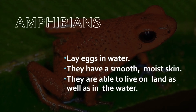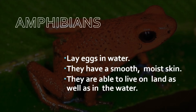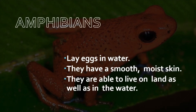Amphibians are able to live on land as well as in water. They lay eggs in water, and when they grow up into adults they move onto land. For example, the frog lays eggs in water and the tadpoles that hatch breathe using gills. When they grow into an adult frog, they breathe using their skin and lungs — their gills are modified into lungs which help them breathe on land.